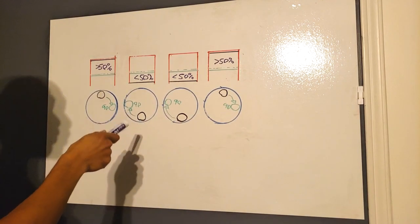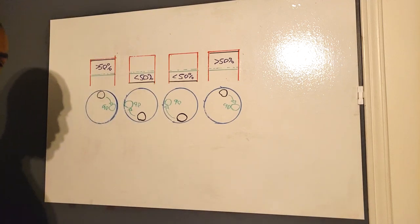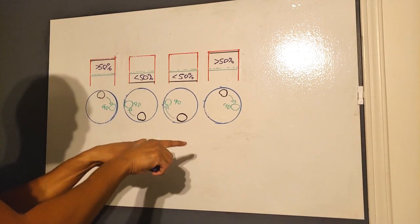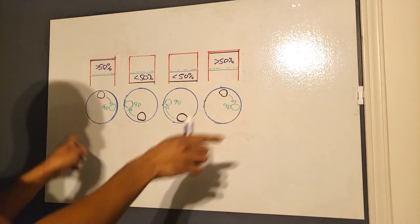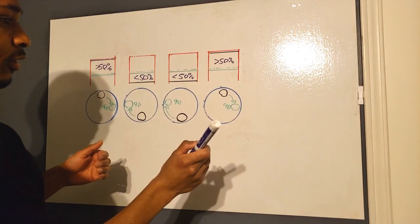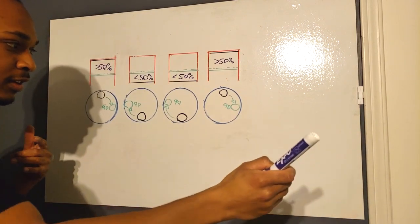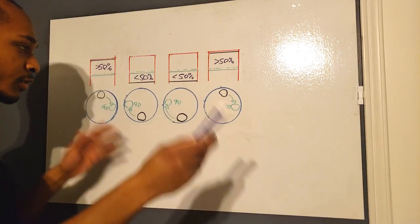This is true for V8s, V6s, inline sixes, for anything, every engine, except for a boxer, because they're actually moving opposed to each other. So the piston that is moving away is matched with another piston that's moving away. So their inertia is actually matched in that case. So those get vibrations for other reasons.